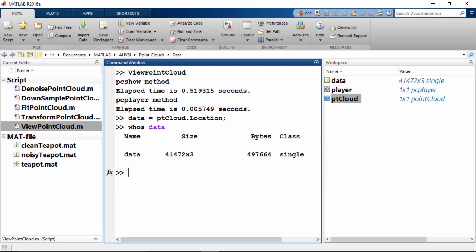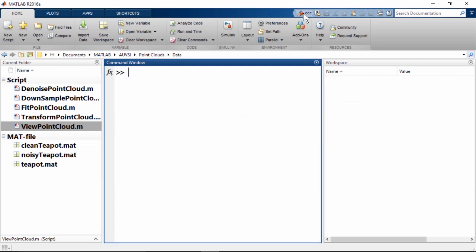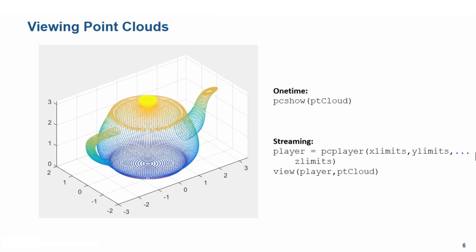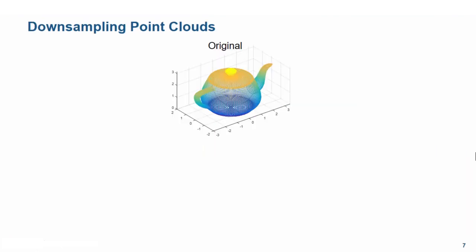So it looks like we need to do some data pre-processing before working with point clouds. We have seen how we can bring point clouds into MATLAB — either a previously saved MAT file or using pcread to read in a PLY file. Once we are done processing the data, we can save it as a MAT file or use pcwrite to create another PLY format file. We also saw the different ways of viewing point clouds using pcshow and pcplayer. Next, we'll talk about the different kinds of data pre-processing, starting with down-sampling. The data contained in a point cloud is usually measured in gigabytes, and when resources are limited, down-sampling is very useful.